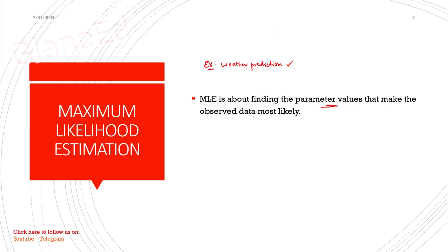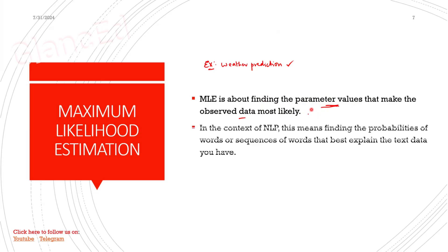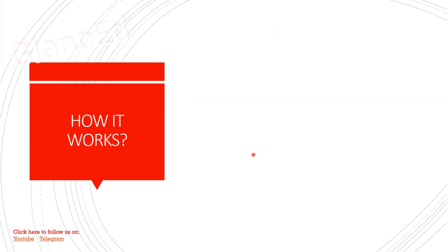MLE is about finding the parameter values that make the observed data most likely. You decide parameter values based on observed — that is, previous — data. If something happens many times in that previous data, you consider it. In NLP, for guessing the next word, you use the parameter probability: you calculate the probability of the word occurring most often in a given sequence.